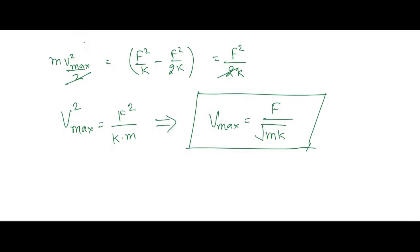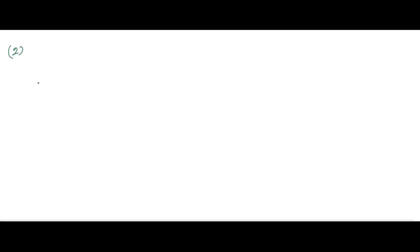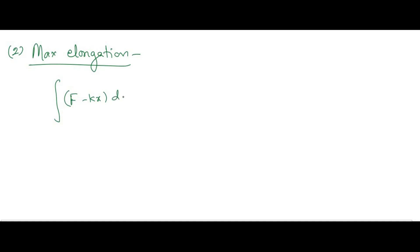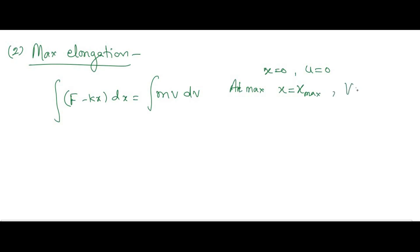Now let us solve for the second part: find the maximum elongation. From the same differential equation, m·v·dv = (F − kx)·dx. At maximum elongation x_max, the final velocity will also be zero — because at the extremum the kinetic energy is minimum. So both the initial velocity at x = 0 and the final velocity at x = x_max are zero.